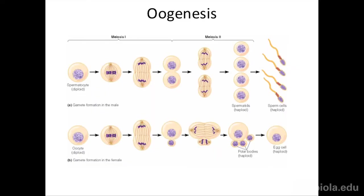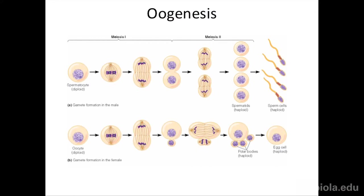Only one daughter cell gets the cytoplasm. When you go through the second round of meiosis, the division is again asymmetrical. Sometimes the tiny polar body goes through a second meiosis, sometimes it doesn't, depending on species. The big cell also divides asymmetrically, so only one cell inherits most of the cytoplasm, and the other becomes a third polar body. Depending on the animal, you might see one, two, or three polar bodies. The main point is you're only going to get one egg.